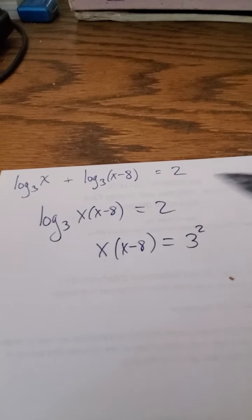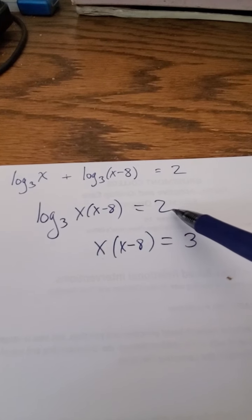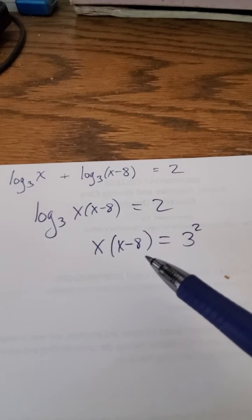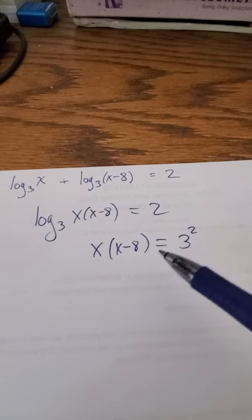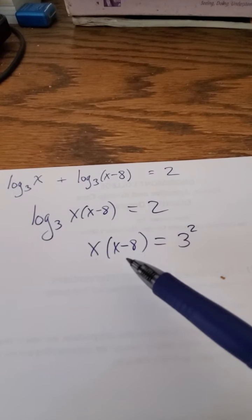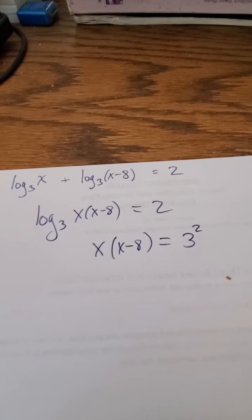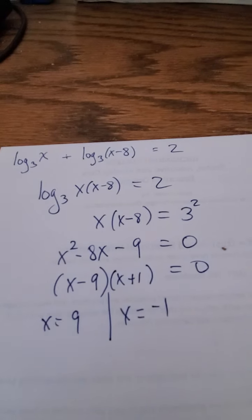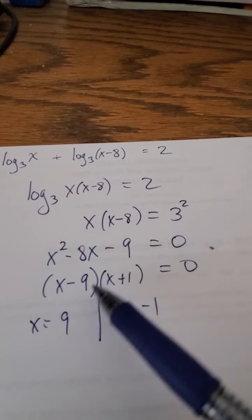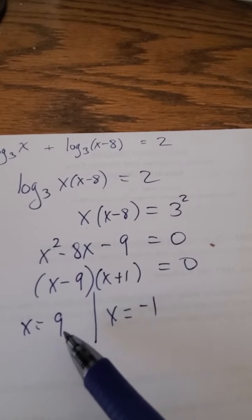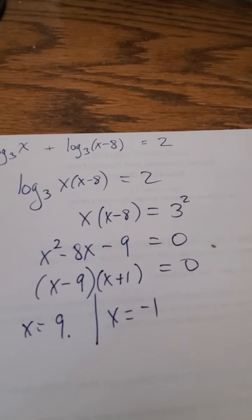Well, this now is going to turn out to be a simple quadratic. I'm just going to expand out the parentheses and bring the 3 squared to the other side, and it's going to leave us with a quadratic which is very easy to factor. And here's my two solutions: x equals 9, x equals negative 1.